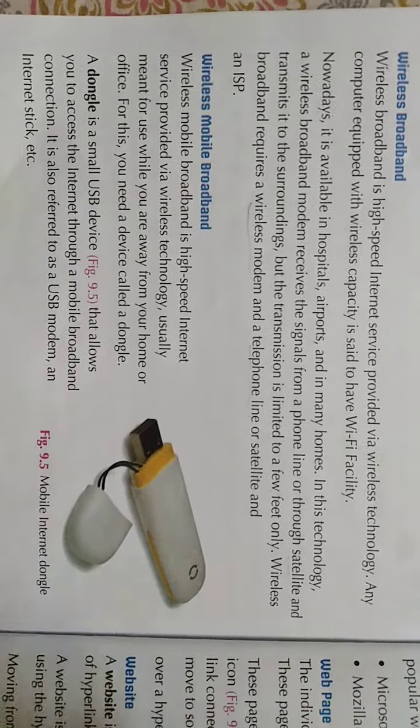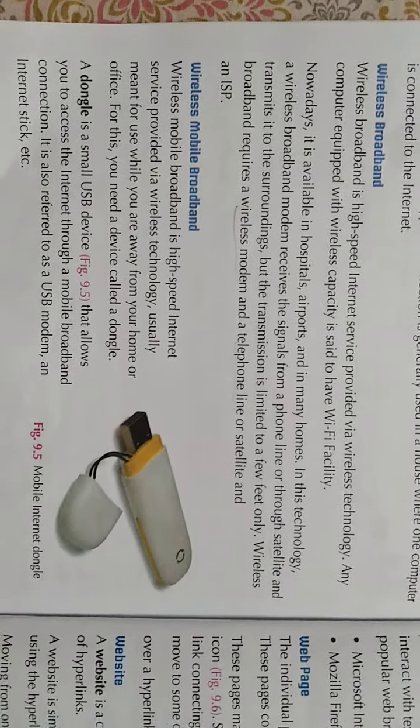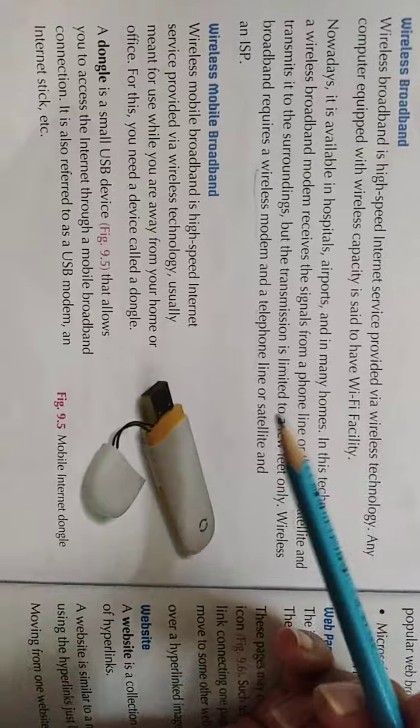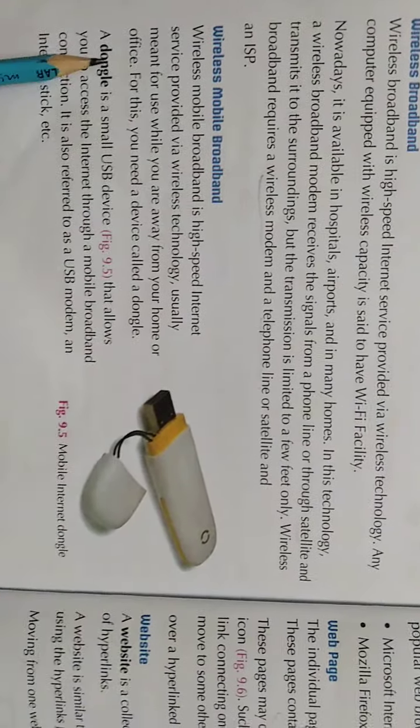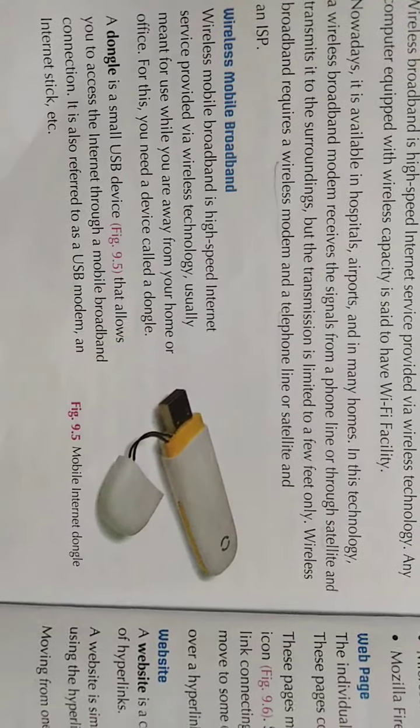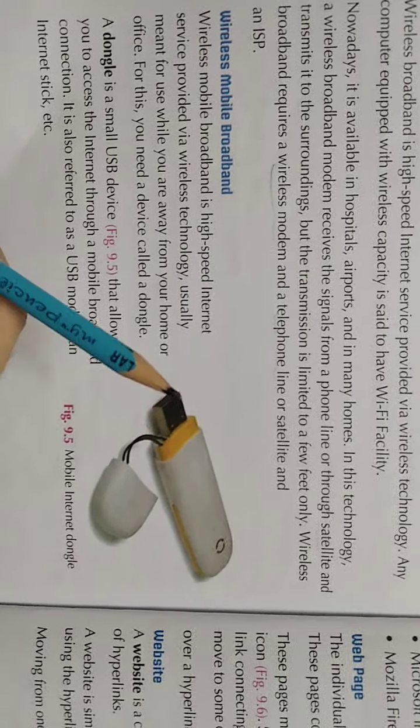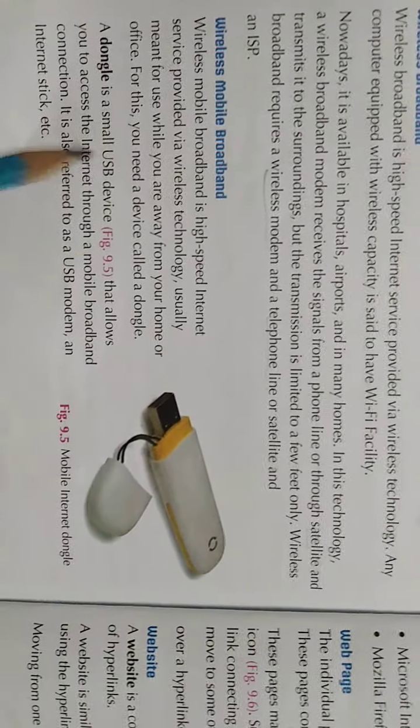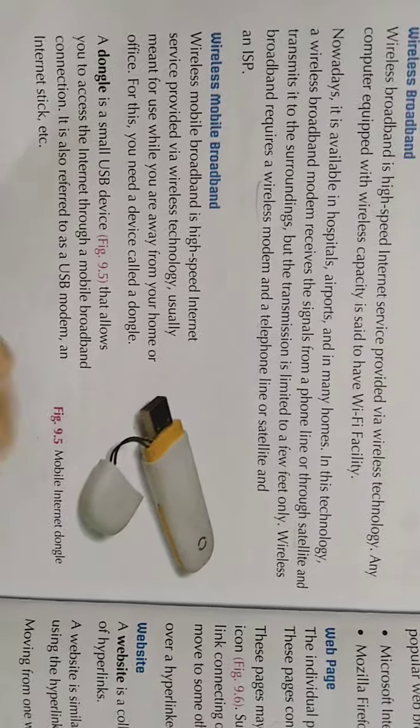Then comes the wireless mobile broadband. It is used - you know that nowadays companies like Jazz, Warid, these all companies give you internet. So that is wireless mobile broadband and it is used with dongles. Dongles means the small USB which contains a SIM, a data SIM which gives you the internet.